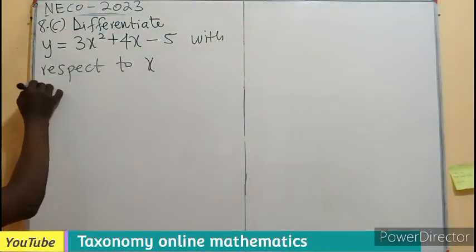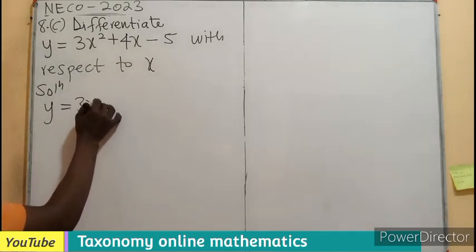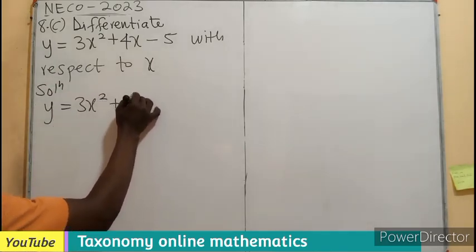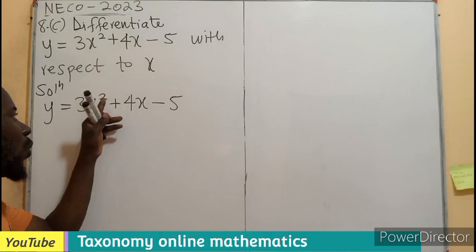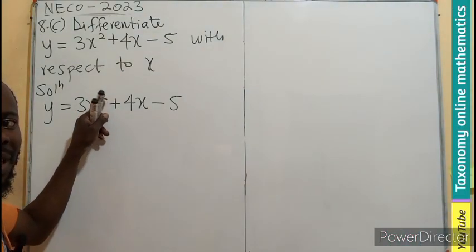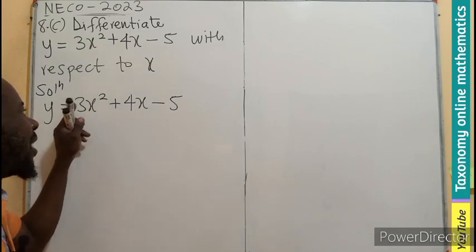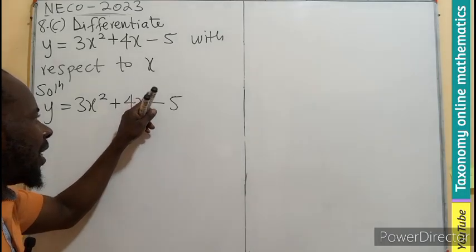So let's do this. y being equals to 3x squared plus 4x minus 5. We know on that differentiation, what do we do? We subtract or we multiply the power and the coefficient. Then we decrease the power by 1. We multiply and decrease.